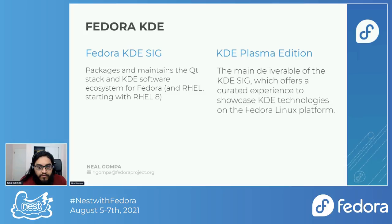Fedora KDE is a special interest group. It packages and maintains the Qt stack of the KDE software ecosystem for Fedora and Red Hat Enterprise Linux, starting with RHEL 8. We produce the KDE Plasma Spin, which is the main deliverable of the KDE SIG, and it offers a curated experience to showcase KDE technologies on the Fedora Linux platform.